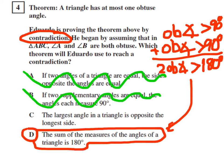So, Eduardo must have used D to... Well, I'm sorry. D is the theorem that Eduardo will use to reach a contradiction.